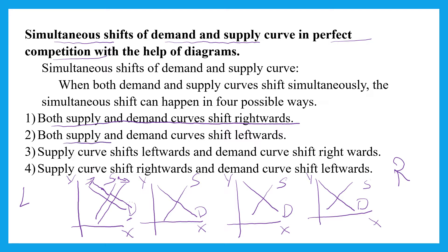The second one: supply and demand curves shift leftward. For supply, left side is this one, and for demand, left side means like this. This we call it as leftward shift of both supply and demand curve. In the third point, supply curve shifts towards the left side and demand curve shifts towards the right side. This is how it takes place.